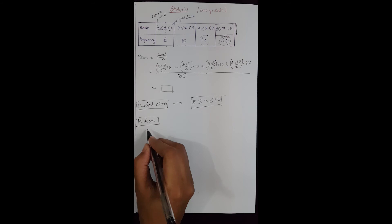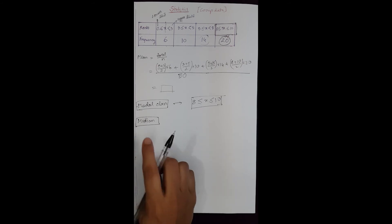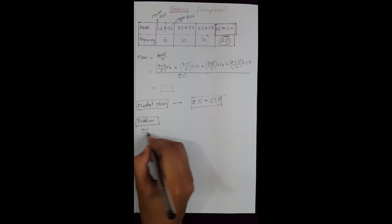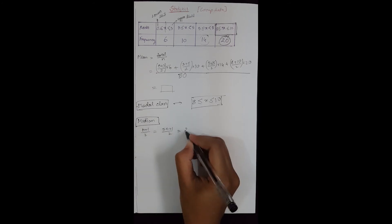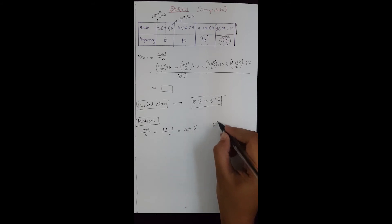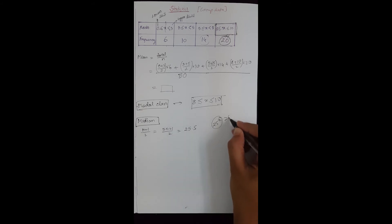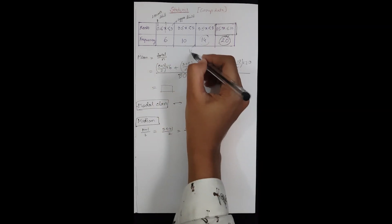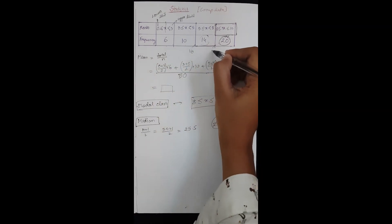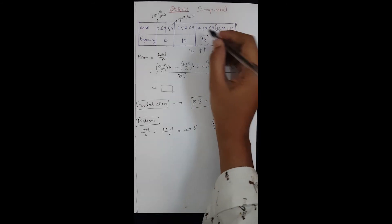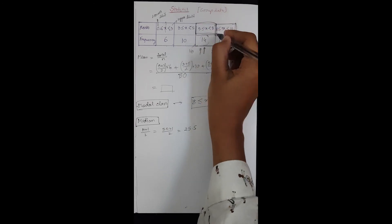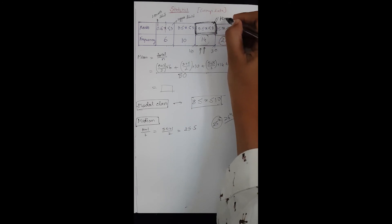To calculate the median for grouped data we use a new formula. First we find N plus 1 divided by 2, which is 51/2 = 25.5, meaning we need the 25th and 26th terms. Cumulating: 6 plus 10 is 16, plus 14 is 30, so the 25th and 26th terms fall in the class 5 to 8, which is the median class.